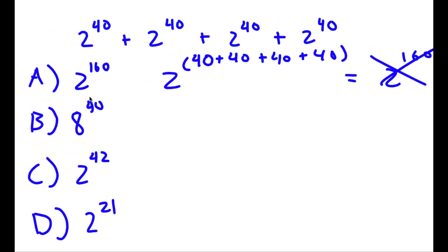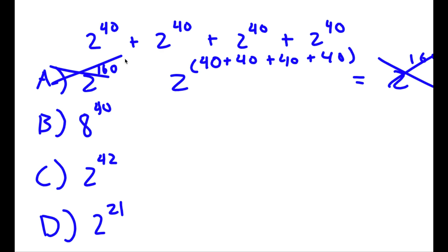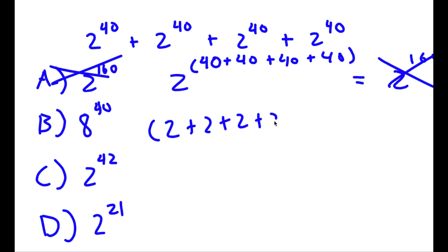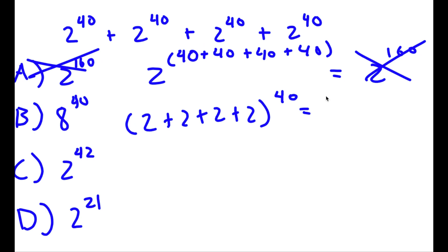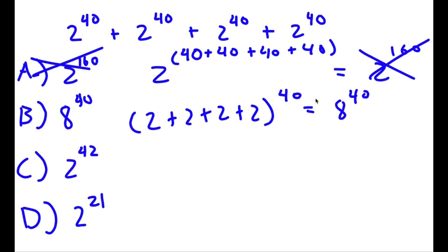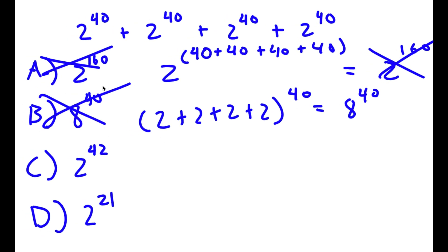This method is actually wrong because that's not the right way to add exponents. Now let's try B, which is 8 to the power of 40. How you get this is you keep the exponent the same and simply add the bases: 2 plus 2 plus 2 plus 2 to the power of 40. 2 plus 2 is 4, 4 plus 2 is 6, 6 plus 2 is 8, so you get 8 to the power of 40. This method is also wrong — you can't simply add the bases together.